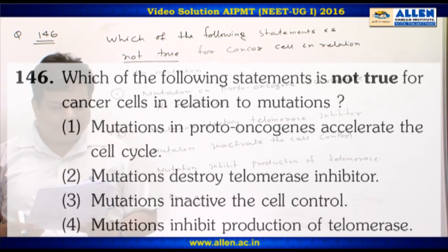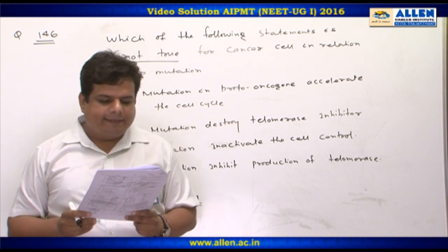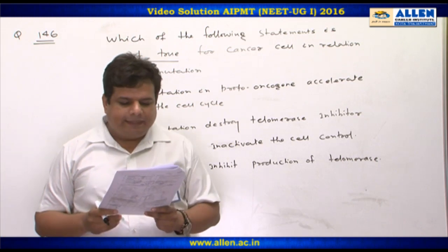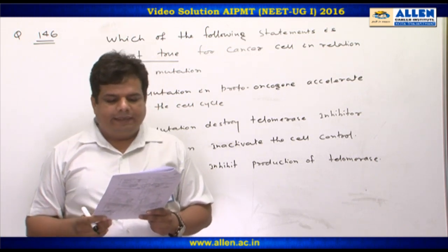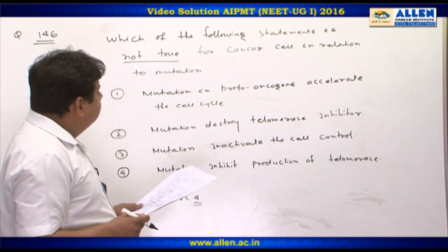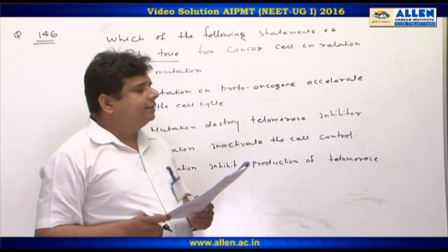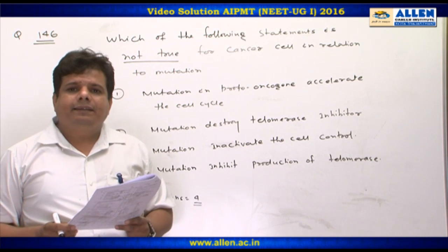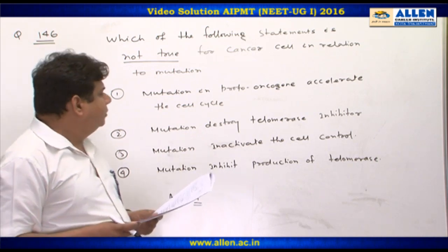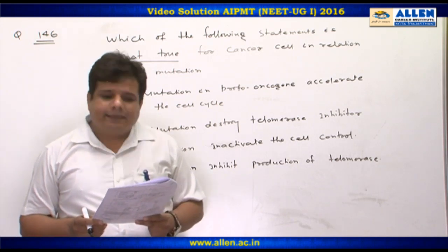Question number 146: which of the following statements is not true for cancer cells in relation to mutations? Option one: mutation in proto-oncogene accelerates the cell cycle — correct, as proto-oncogenes are converted into oncogenes, accelerating the cell cycle. Option two: mutation destroys telomerase inhibitor — also a correct statement.